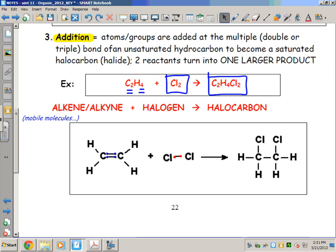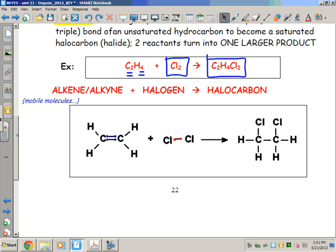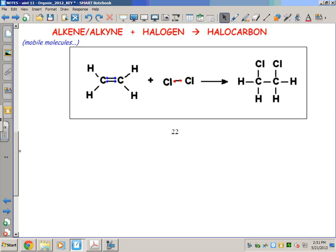Well, now we're doing an addition reaction. That means we're going to take these two things on the left—my hydrocarbon, which is an alkene, an unsaturated hydrocarbon—and we're going to combine it with the chlorine and make one larger organic product. Let me show you what it looks like because I've mobilized a couple of the atoms here.